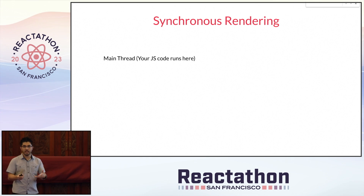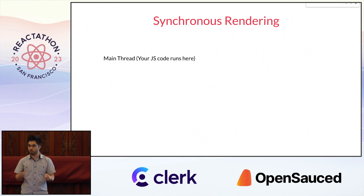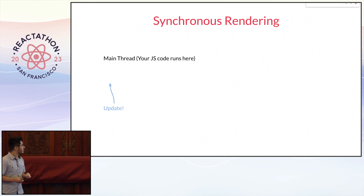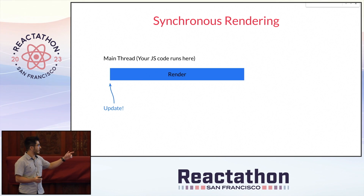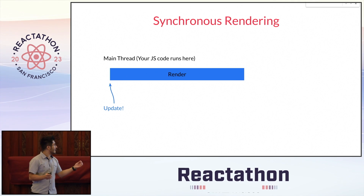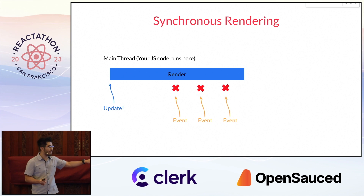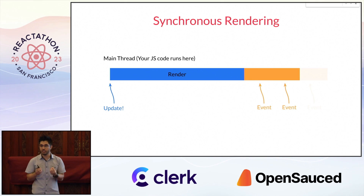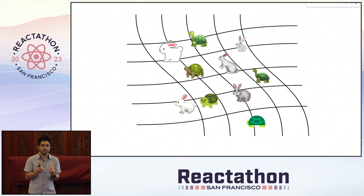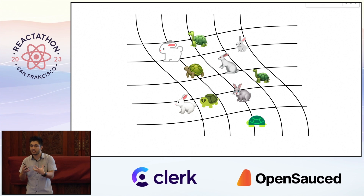Let's understand why this is the case. The reason this happens is because the default approach React uses for rendering — which is also, for many UI frameworks, the only approach available — is to render things synchronously. With synchronous rendering, once React starts rendering an update, it will run to completion, completely blocking the main thread. In practice, this means that any user interactions that take place during this render will have to wait for it, regardless of how fast or urgent responding to them would be. This is what causes slow components to get coupled with the fast components.